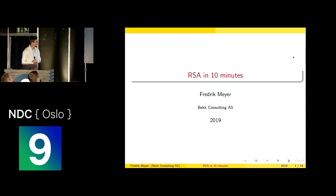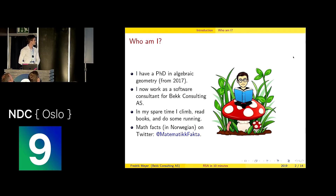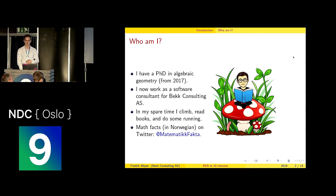I'll just sort of start over. So I will talk about RSA in 10 minutes. I originally made this for 20 minutes, so maybe some places I will talk quickly or skip things. My background is that I have a PhD in algebraic geometry, so I thought the mathematics of RSA is easy. It turns out I'm a procrastinator, so it's hard if you procrastinate. I don't do academia stuff anymore — I work as a software consultant. In my spare time I climb, run, read books, and I have a math account on Twitter in Norwegian at Mathematik Fakta.